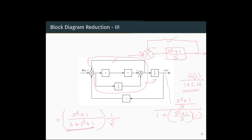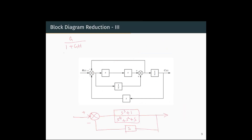Finally, we have a feedback loop with negative feedback and feedback element H equal to S. Applying the negative feedback law G divided by 1 plus G·H, where G is (S³ plus 1) divided by (S⁴ plus S² plus S) and H is S, after applying and reducing we get the entire block reduced to (S³ plus 1) divided by (2S⁴ plus S² plus 2S). This is the final reduced block diagram between the output and the input.